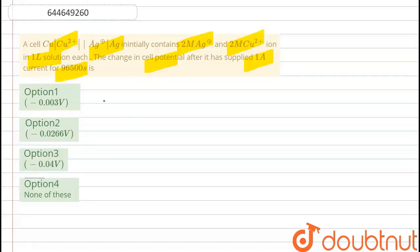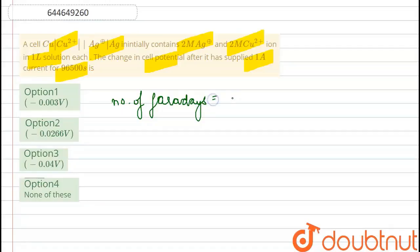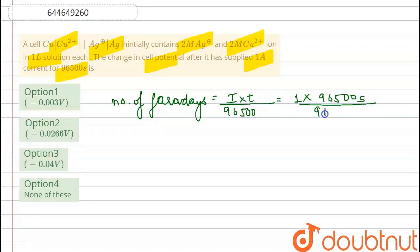Firstly, what we need to find out is the concentration of the Cu²⁺ ion, and for that we need to calculate the Faradays supplied. The number of Faradays supplied is equal to i × t divided by 96500, which is Faraday's constant. Current is 1 ampere and time is 96500 seconds, so the number of Faradays comes out to 1.